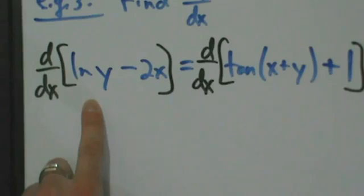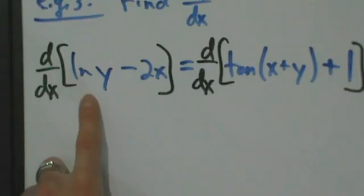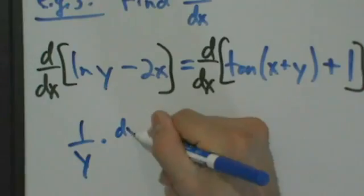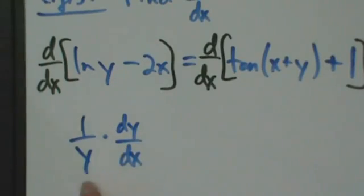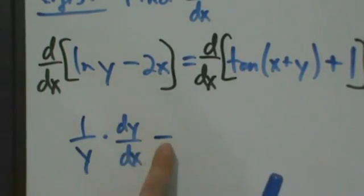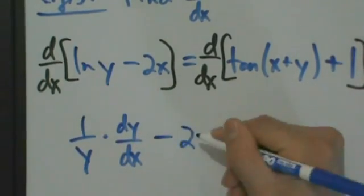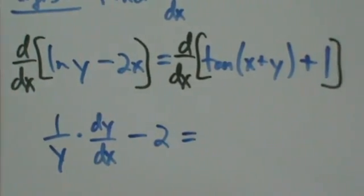So if you have natural log of a thing and you want to take the derivative of that, the derivative of natural log of a thing is 1 over that thing times the derivative of that thing. So for natural log of y, the derivative is 1 over y times dy/dx — that's what the chain rule says. And now minus 2x: the derivative of 2x is just 2, so we have minus 2 here. That's the left side.